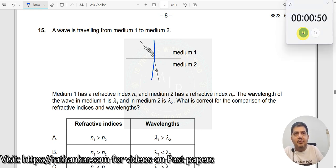If you draw the normal here, this is your theta 1, this is your theta 2. Clearly, you can see theta 1 is larger than theta 2, which means this will be your rarer medium, this will be your denser medium.